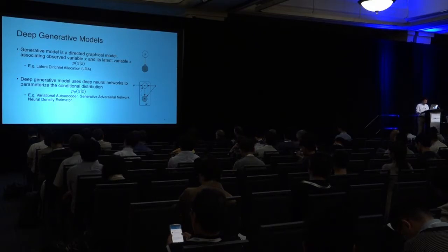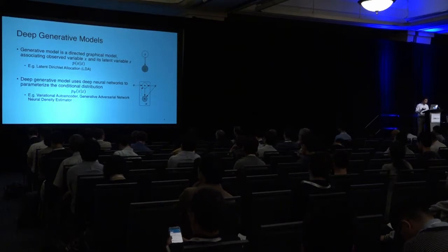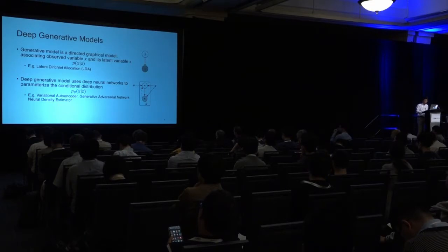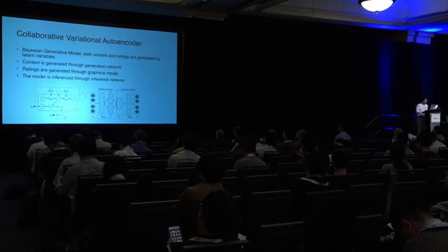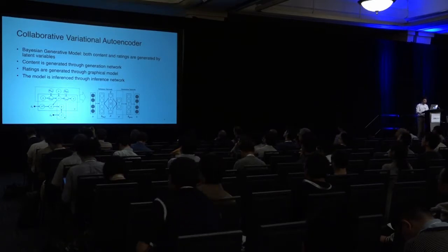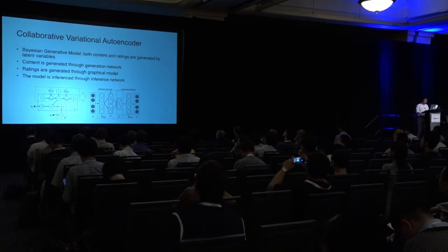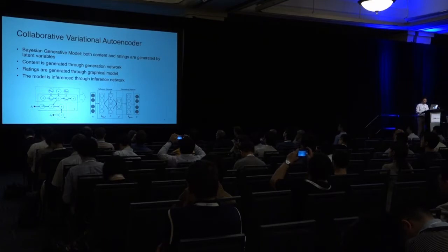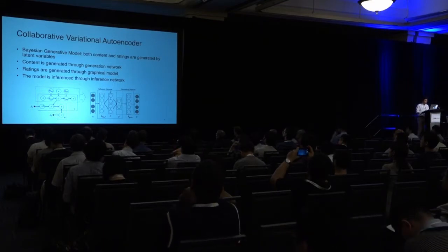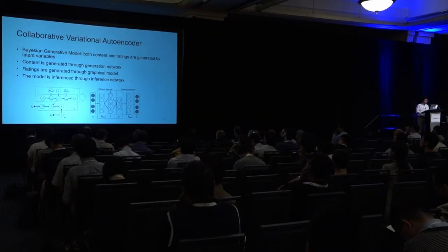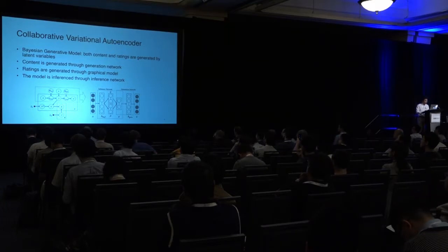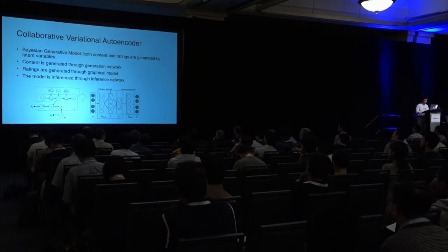Although deep generative models are exciting, people generally don't know what they can do besides generating pretty pictures. Here we show that deep generative models can be very useful for recommendation. Our proposed model is the Collaborative Variational Autoencoder (CVAE). It is a Bayesian generative model where all observations are assumed to be generated. We have two observations: the content of the item and the ratings of items given by users. The content is generated through a generation network and the ratings are generated through other parts of the graphical model, with inference performed through an inference network.